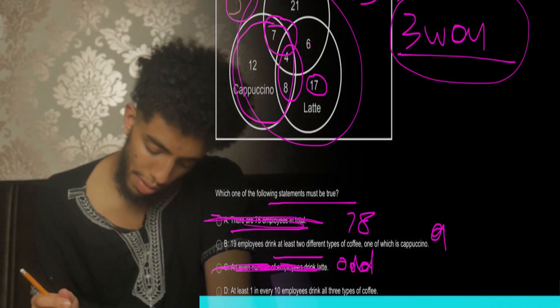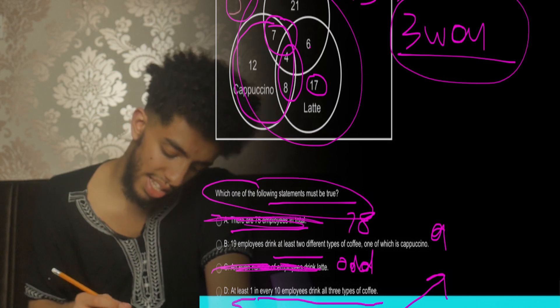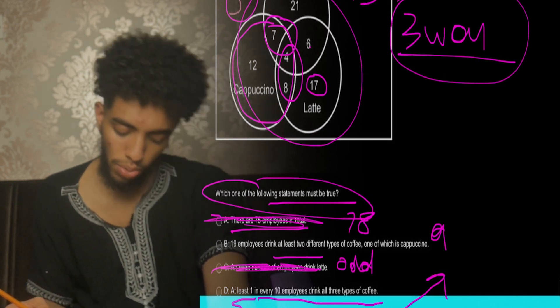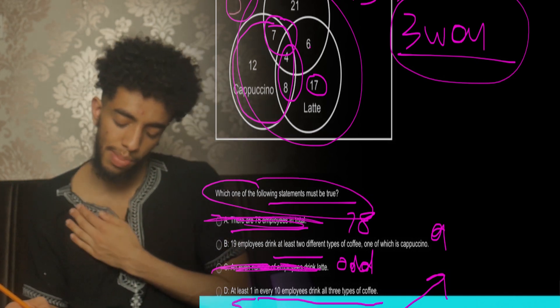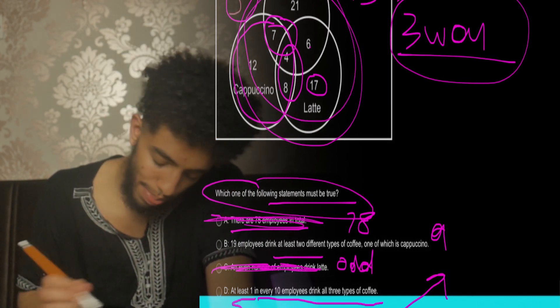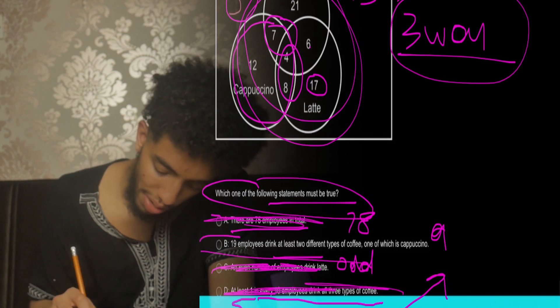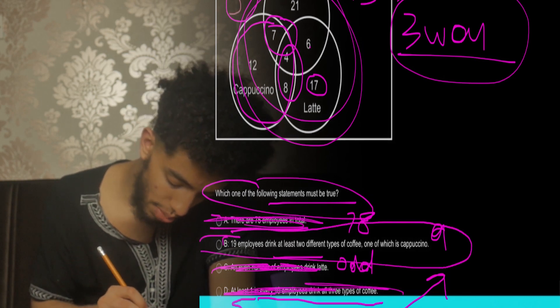Now if we go on to number four, we can see it says that at least one in every 10 employees drink all three types of coffee. Now these values in the table are not for all employees, so by default we're going to know that's wrong. Hence we know that the only feasible one is the second one, and I hope that really explains it to you.